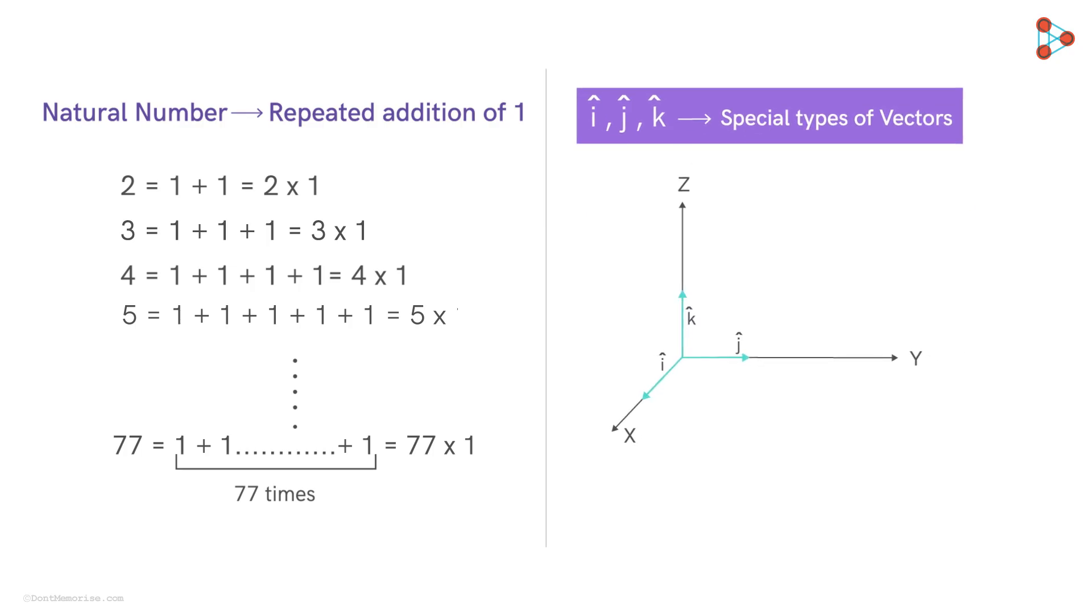So for example, suppose we have a vector a in the 3D space. Then it can be decomposed into addition of these vectors like this. Don't worry about what all these symbols mean. We will understand them in detail. But for now, the point is that, similar to the natural numbers, a vector can be decomposed into a set of special elementary vectors.